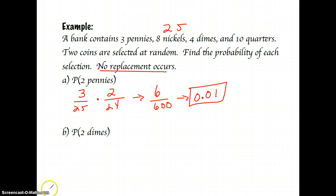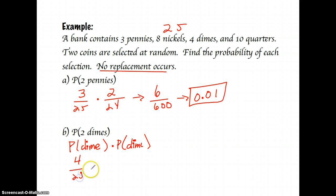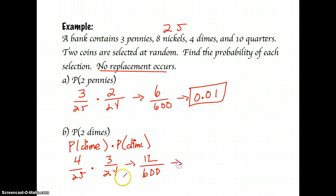For the probability of selecting two dimes with no replacement: 4/25 times 3/24 = 12/600, giving a probability of 0.02. On these problems, always consider the probability of selecting the first coin, then the probability of selecting the second. Please do not try to consider selecting both coins at the exact same time — it's much easier to think of selecting one, decide whether to replace it or not, and then determine how the second probability is affected.